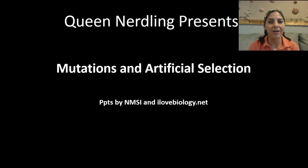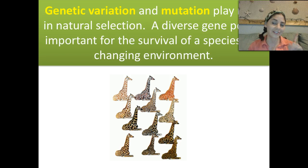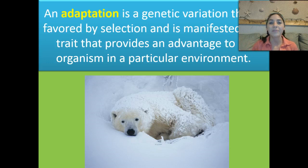Genetic variation and mutation both play roles in natural selection, which we just got through speaking about. A diverse gene pool is important for the survival of a species in a changing environment. We need to have sex to increase genetic variation. An adaptation is a genetic variation that's favored by selection and is manifested as a trait that provides an advantage to an organism in a particular environment.